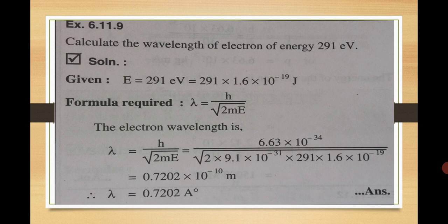Calculate the wavelength of an electron of energy 291 electron volts. What is given? Energy is 291 electron volts. Since charge on electron is 1.6 × 10⁻¹⁹, we multiply by that to get energy in joules: 291 × 1.6 × 10⁻¹⁹ joules.